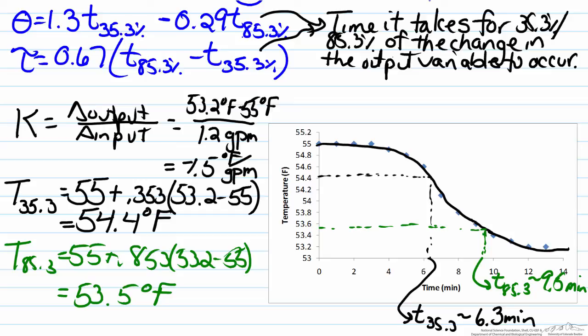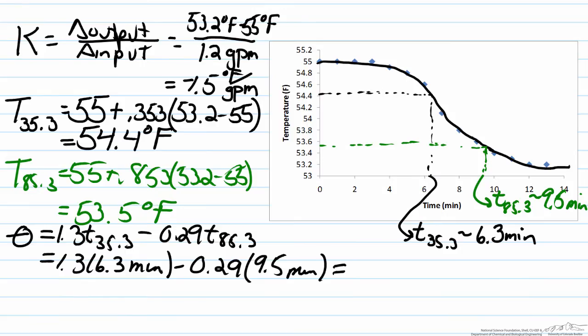Now that we have the t 35.3 and 85.3, we can now use the correlations to find our dead time and our time constants to finish out our FOPDT analysis. So we have the relationship for theta, and when we do that we end up with 5.4 minutes. Similarly we can find tau, and we end up with our time constant of 2.14 minutes.